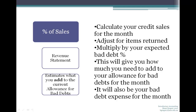You multiply net credit sales by your expected bad debt percentage. For example, if you had $100 in sales in a month and you expect 2% will ultimately result in bad debts, you multiply the $100 of credit sales by 2%, giving you a $2 bad debt expense. This tells you how much you need to add to your bad debt allowance — $2 is your bad debt expense and you add that to your allowance.